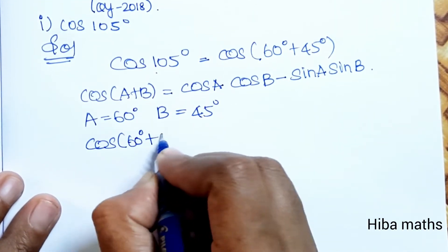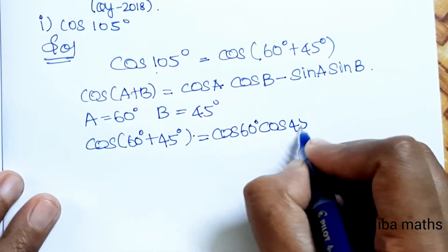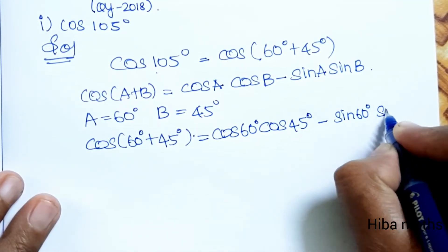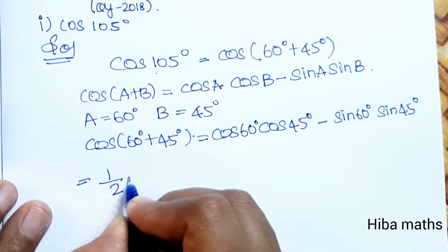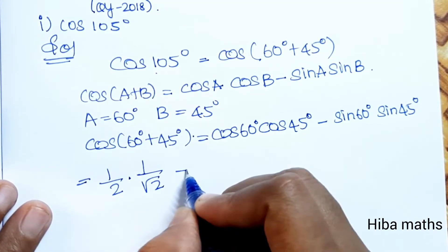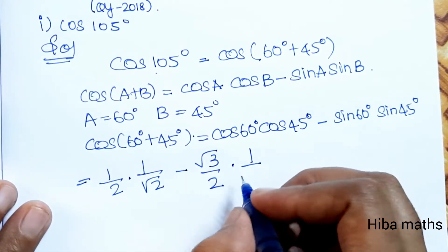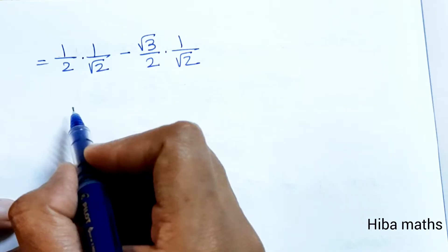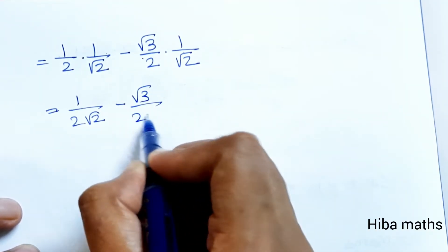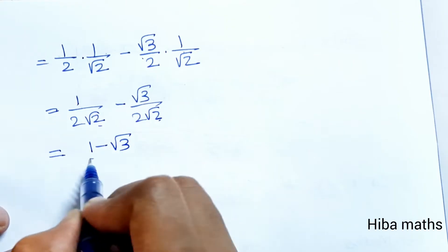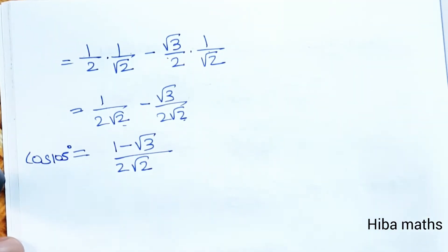cos(a + b) = cos a cos b minus sin a sin b. So cos(60 + 45) = cos 60 · cos 45 − sin 60 · sin 45 = (1/2)(1/√2) − (√3/2)(1/√2) = 1/(2√2) − √3/(2√2) = (1 − √3)/(2√2). This is the value of cos 105 degree.